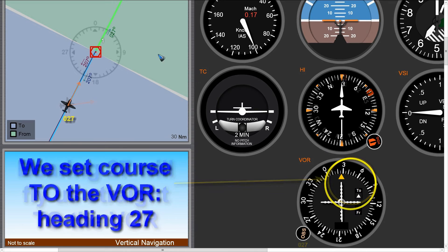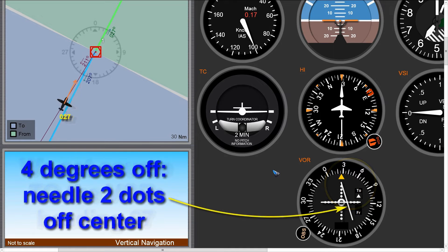And then of course we can change our heading, which I just did. I'm now flying on a heading of 27, which means I'm flying straight to this VOR. The needle is straight and the bearing here is 27, so everything is okay. Suppose I am drifting away due to wind or bad steering — I will get off this radial of 27 and the needle will show that with quite high sensitivity. Every dot on this scale is 2 degrees off. In this example I am 4 degrees off, so I am 2 dots away from the center.